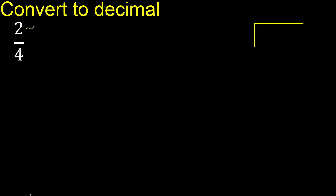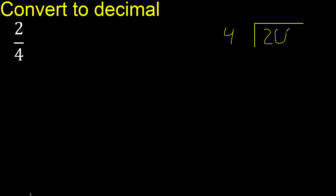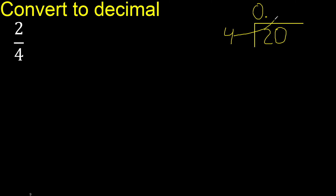2 divided by 4. 2 is less than 4, therefore complete with 0. Point, only once. 20 is not less than 4, therefore 4 multiplied by 6.